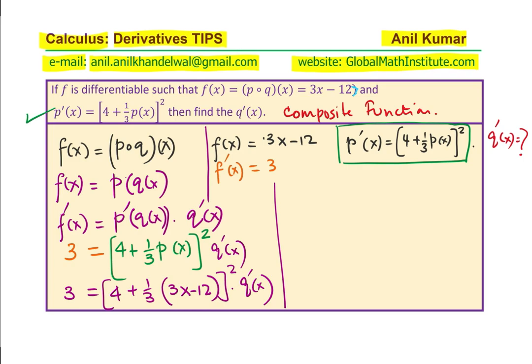You get the idea. Let us open the brackets and simplify. Taking from here, we get 3 = [4 + (x - 4)²] × q'(x), which is 3 = [4 + (x - 4)²] × q'(x). Since 4 - 4 = 0, we are left with x² × q'(x).